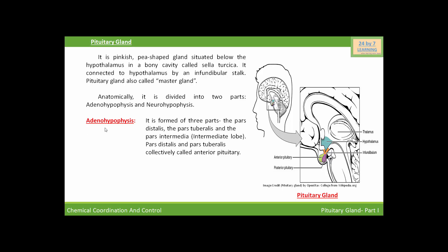Now we are going to discuss the adenohypophysis. Adenohypophysis is formed by three parts: number one is the pars distalis, second is the pars tuberalis, and the third is the pars intermedia, also called the intermediate lobe. Pars distalis and pars tuberalis are collectively called the anterior pituitary. So adenohypophysis comprises the anterior pituitary and the intermediate lobe.